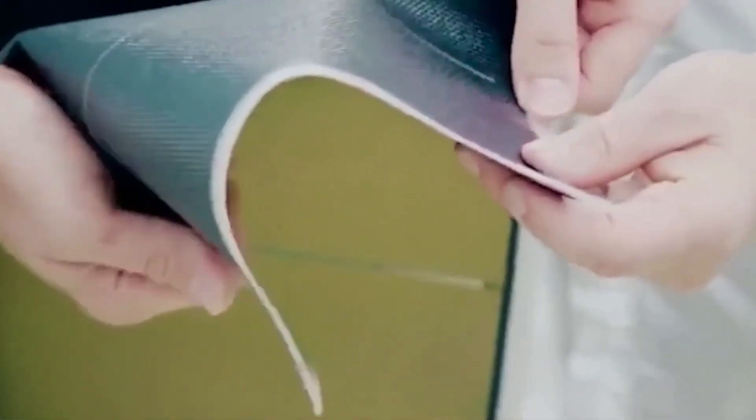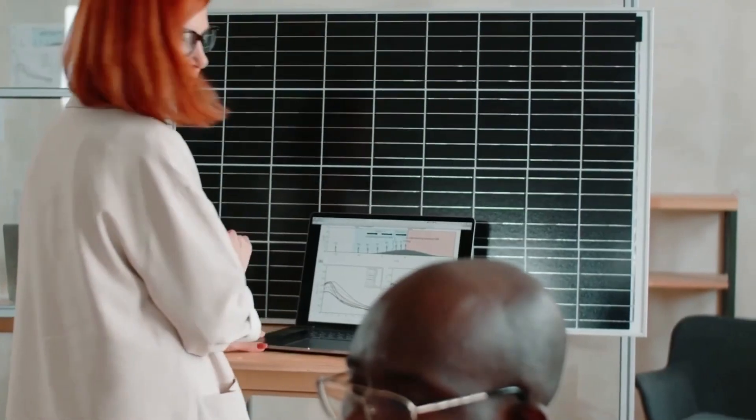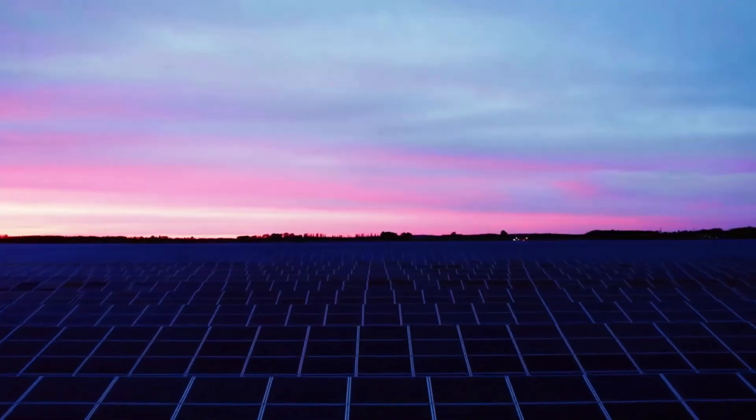Although polymer-based solar cells have many benefits, there are still obstacles to be solved before they can completely replace silicon solar cells. One of the key problems is that, in contrast to silicon solar cells, which can survive for decades, they have a relatively short lifespan.